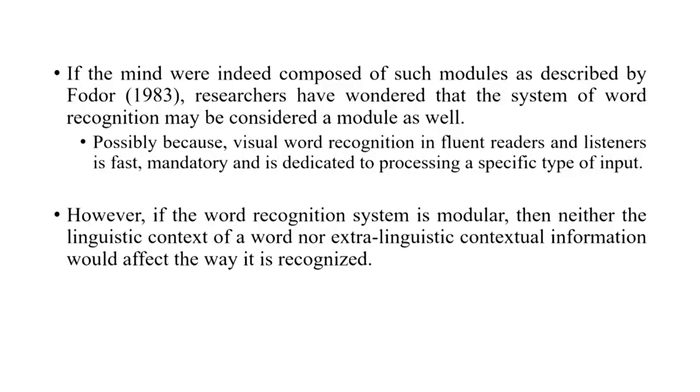If the mind were indeed composed of such modules as described by Fodor, researchers have wondered how the system of visual word recognition may be considered a module as well. The idea is that for fluent readers, visual word recognition is fast, mandatory, and dedicated to processing a specific kind of input. Researchers have reported a particular area in the brain that only lights up when presented with letters and not other stimuli — referred to as the visual word form area. If the visual word recognition system is indeed modular, then neither the linguistic context of a word nor any extra-linguistic information would be able to affect how we make meanings out of the word.